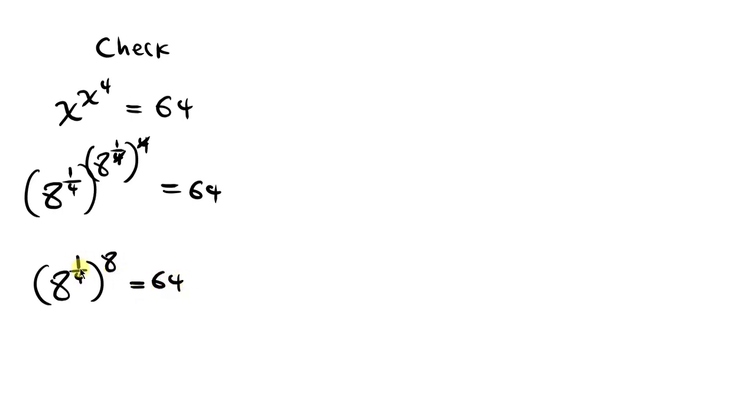Let's do this again. The powers multiply. 1 over 4 times 8 is 2. So we have 8 squared to be equal to 64. So it goes to show that our answer as 8 to the 1 over 4 is correct.